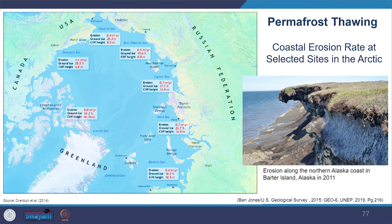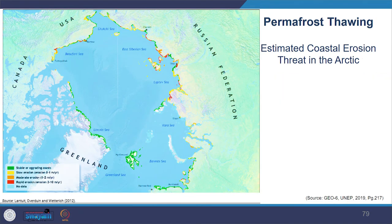Another issue is permafrost thawing. Because of cumulative impacts, arctic areas are getting warmer, causing melting of sea ice and longer ice-free seasons. Melting ice releases greenhouse gases and alters the landscape. Melting also reduces soil and landform stability, increases erosion, and affects arctic habitat, albedo and hydrology. In the image you can see the coastal erosion rate, ground ice, and cliff height at different stations, and in the following image you can see erosion threats shown in red-brown color.